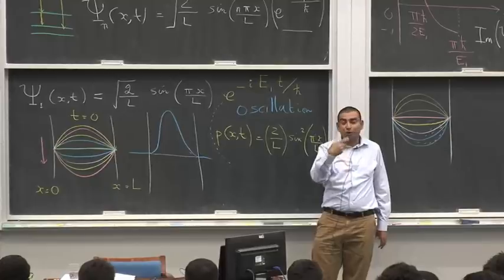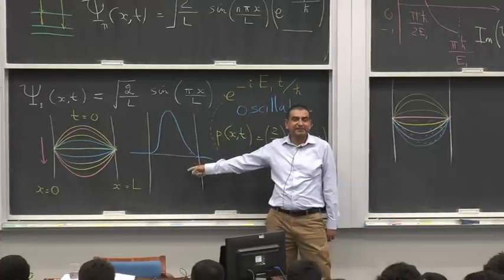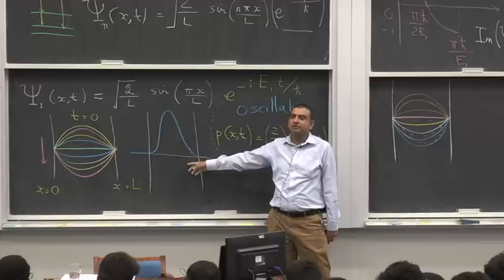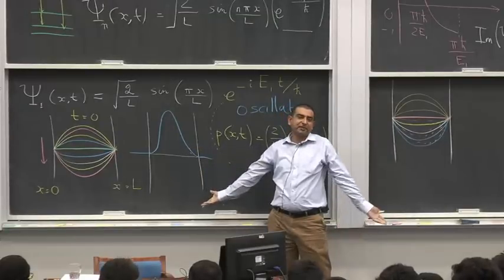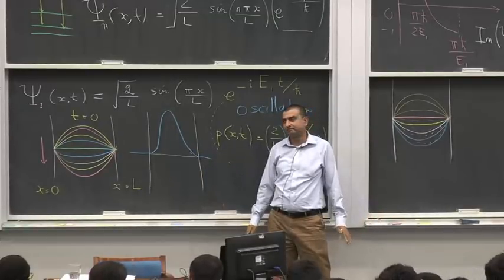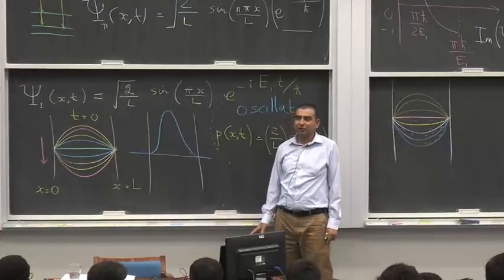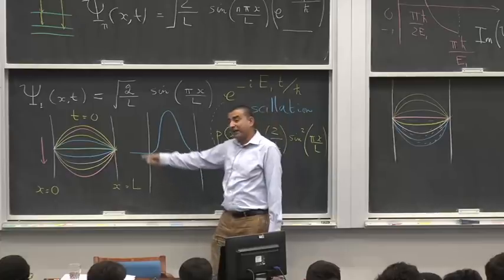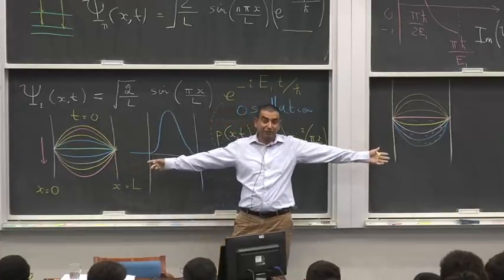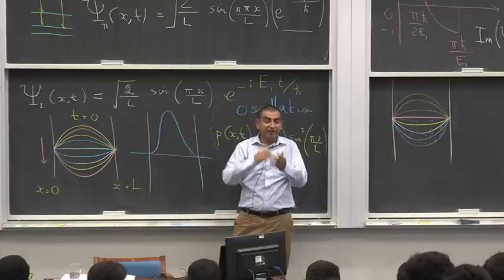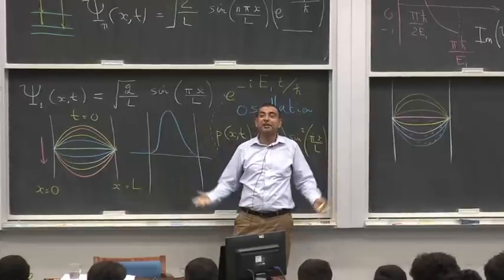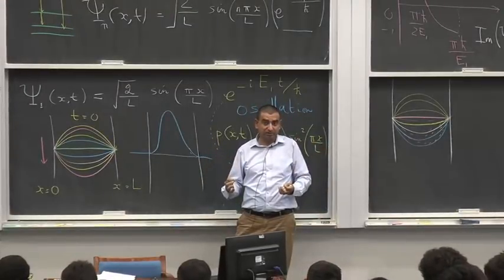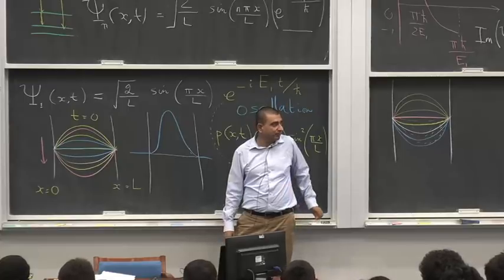What is physically important for an experimenter is the stationary probability density function that doesn't change with time. From an experimenter's point of view, this is what matters. But wave functions do matter if you want to do quantum computing or interference, because you would like to have superpositions — an understanding of the wave functions is actually important.